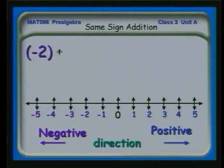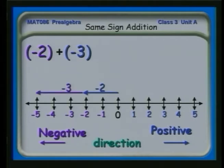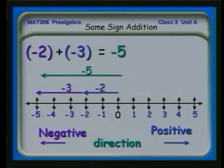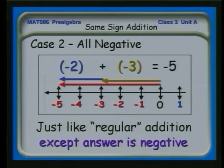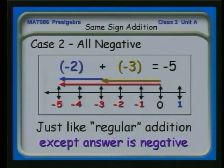Case two: if we have minus two and add that to minus three, we walk minus two to the left, then we walk minus three to the left, and ask where we wind up. We wind up minus five to the left on the number line from the origin. So minus two plus minus three equals minus five. If we have two negative numbers and add them together, they add exactly like positive numbers except that the result is also negative. Minus five plus minus six is minus 11.